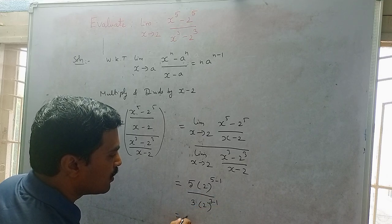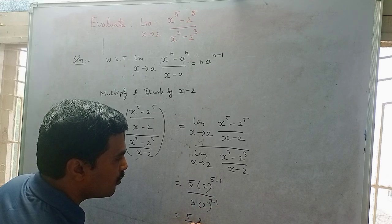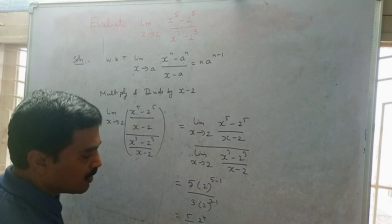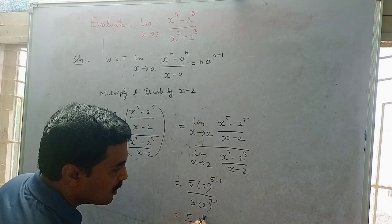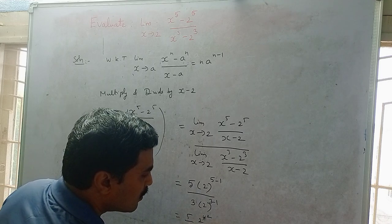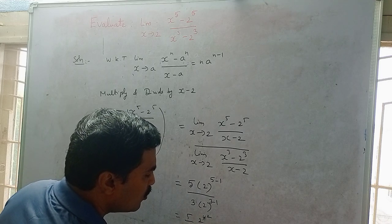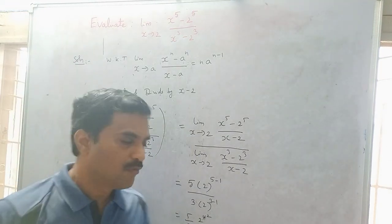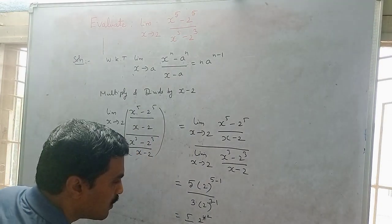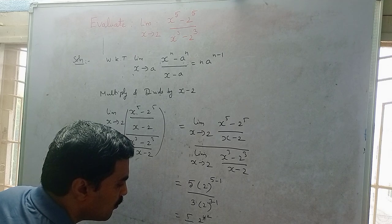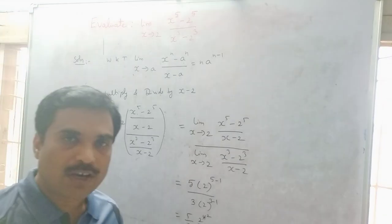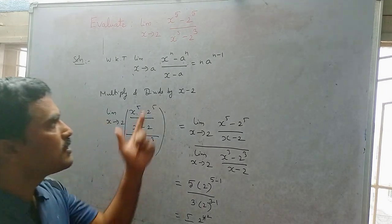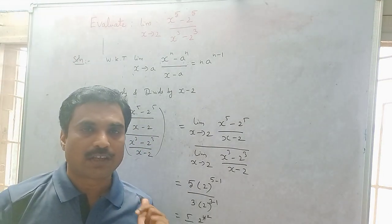So you get (5 times 2^4) divided by (3 times 2^2), which simplifies to (5 divided by 3) times 2^2. Since 2^2 equals 4, you get (5 divided by 3) times 4, which equals 20 divided by 3. So the answer is 20 by 3.